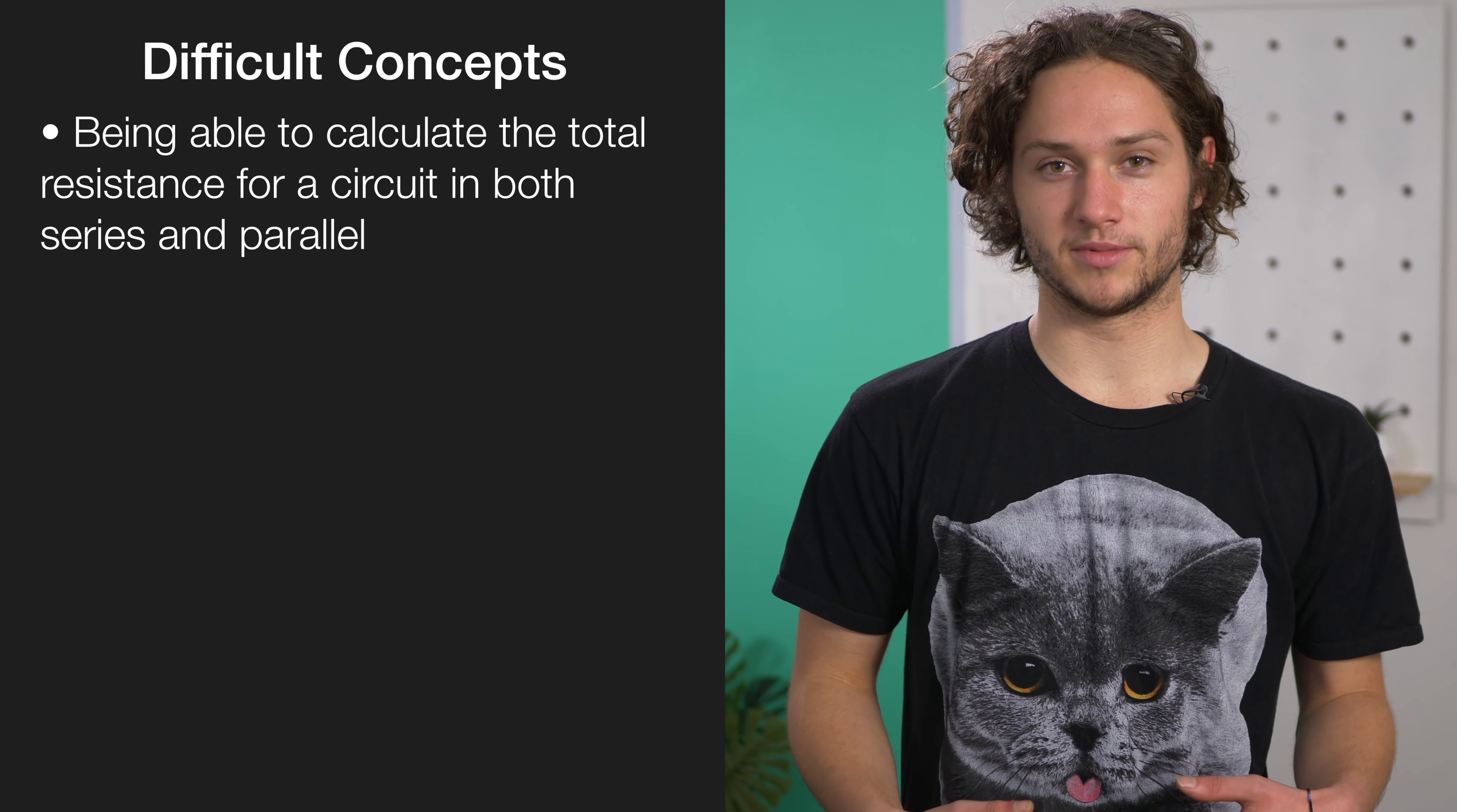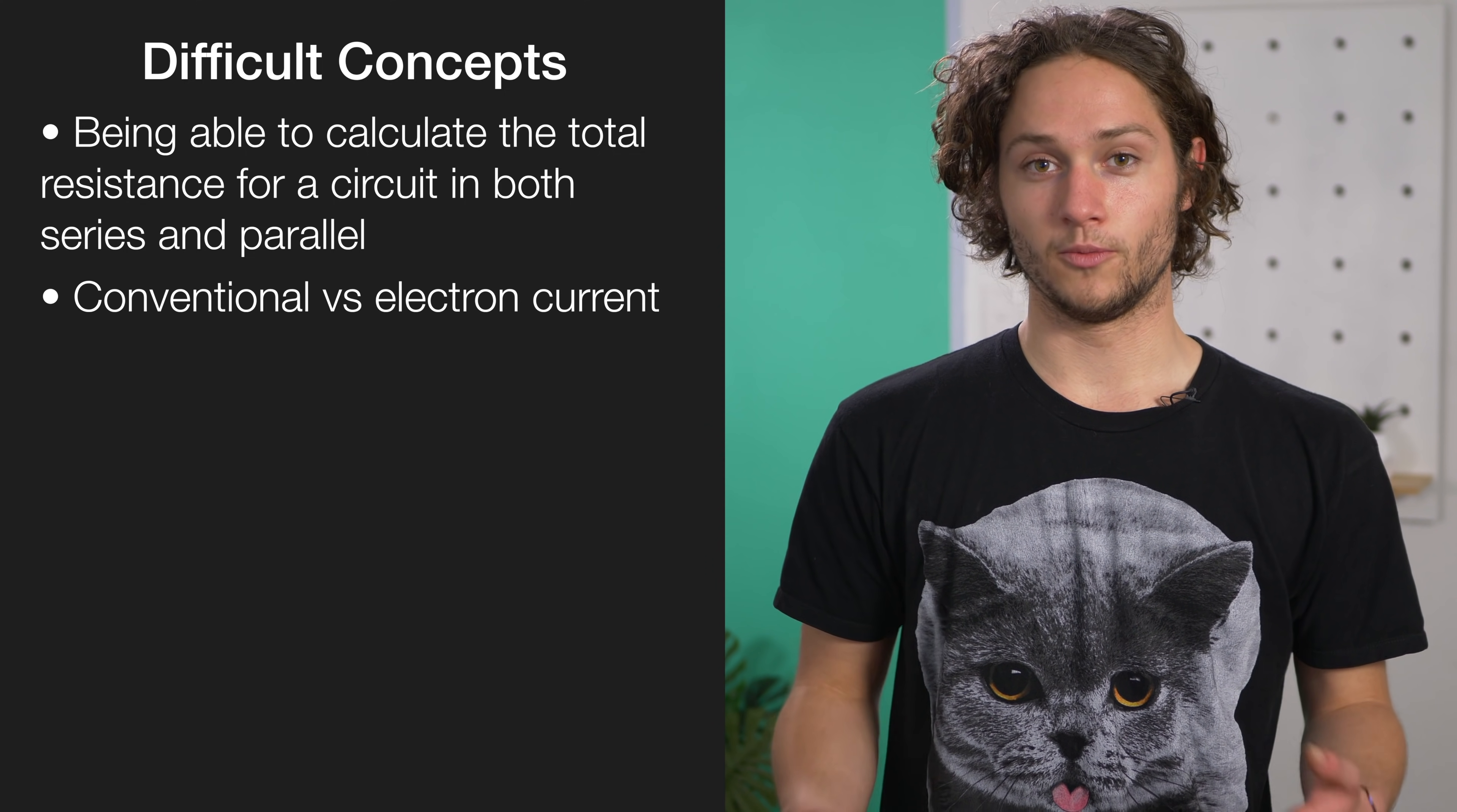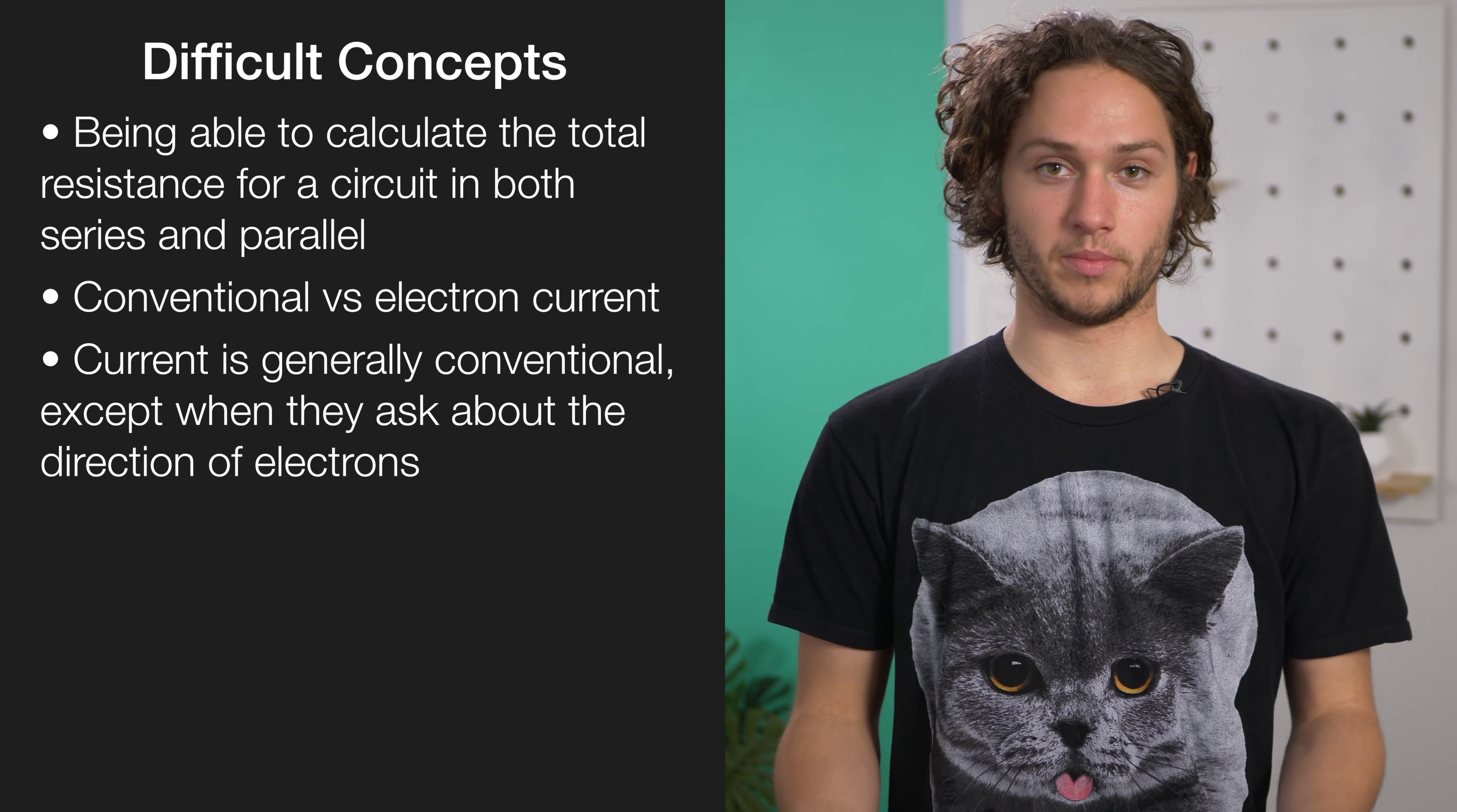Another tricky concept is the idea of conventional current. You have Benjamin Franklin to thank for this. Before they knew about electrons, it was just assumed that current moved in the positive to negative direction. You can tell because of the positive and negative terminal of the battery. In reality, we know that electrons are repelled from the negative plate of the battery, so they move from negative to positive. In general, the direction of the current in Level 2 is conventional current, but when they ask about the direction of electrons, you use the opposite.